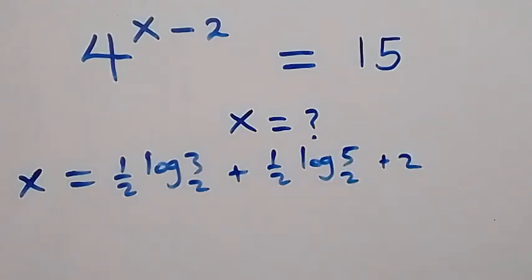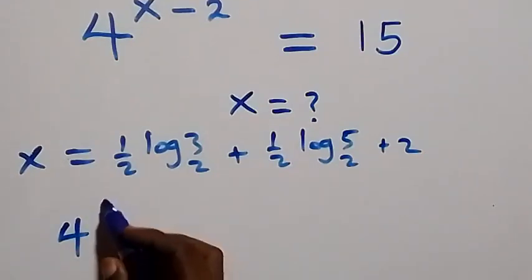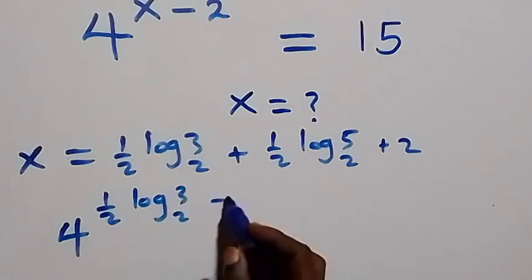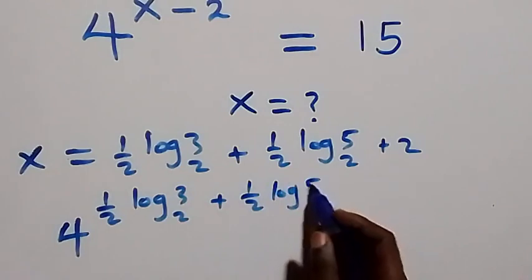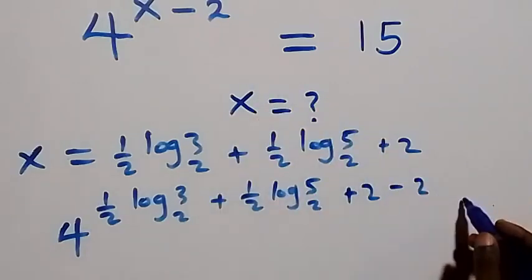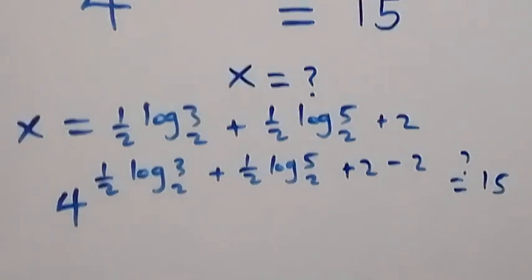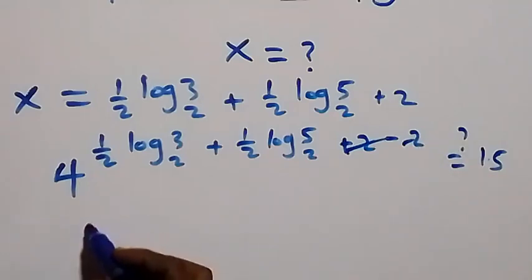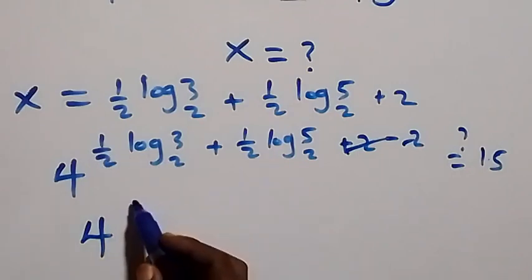When we substitute here, what we have becomes 4 raised to power half log 3 base 2, plus half log 5 base 2, plus 2, then we have minus 2, is equal to 15.